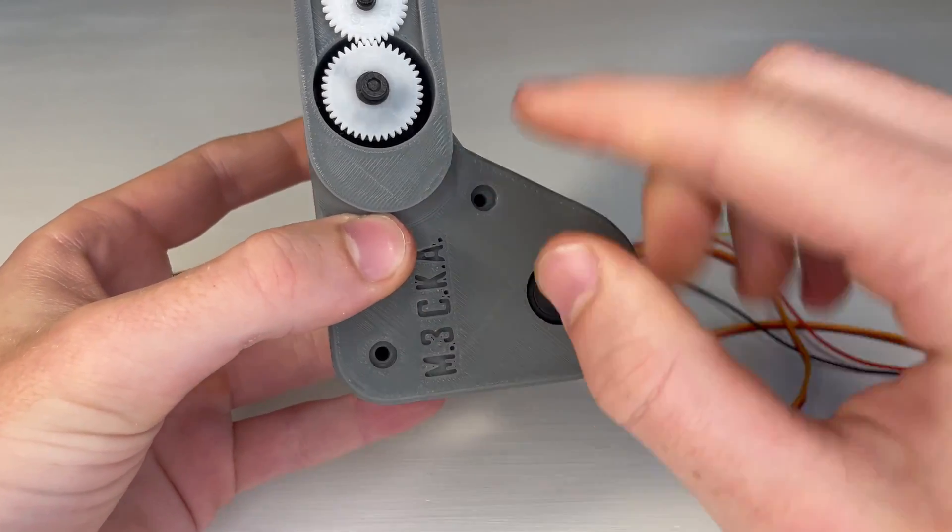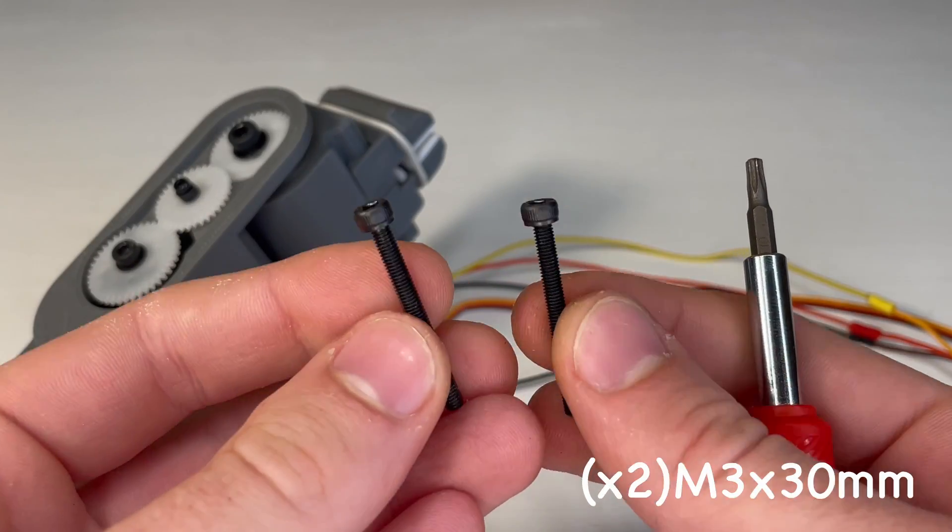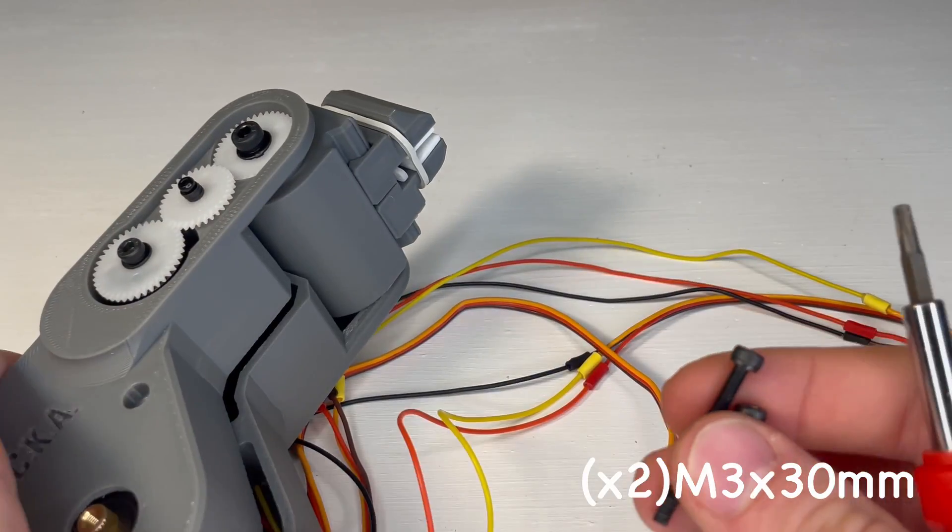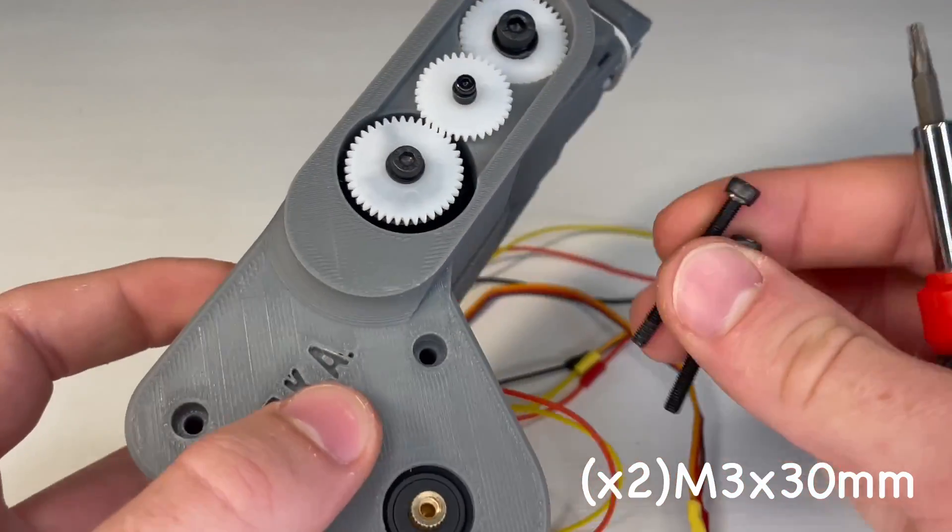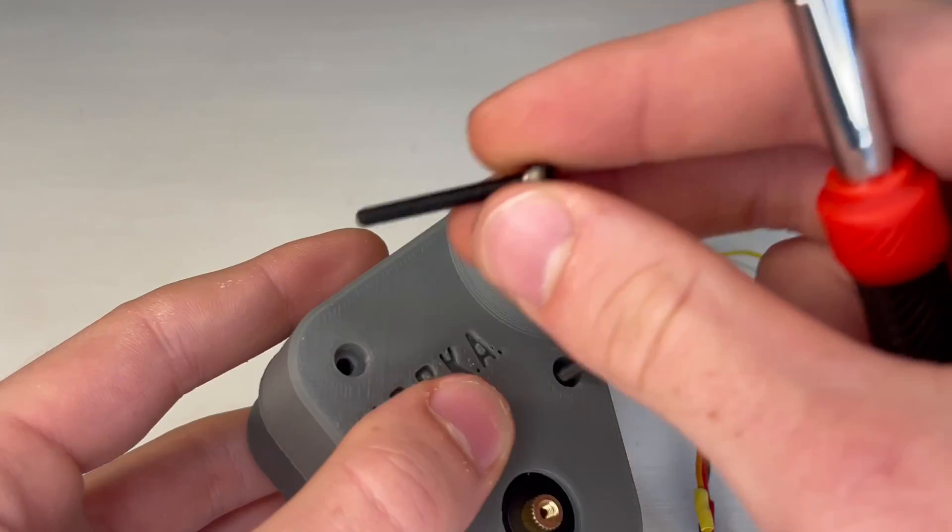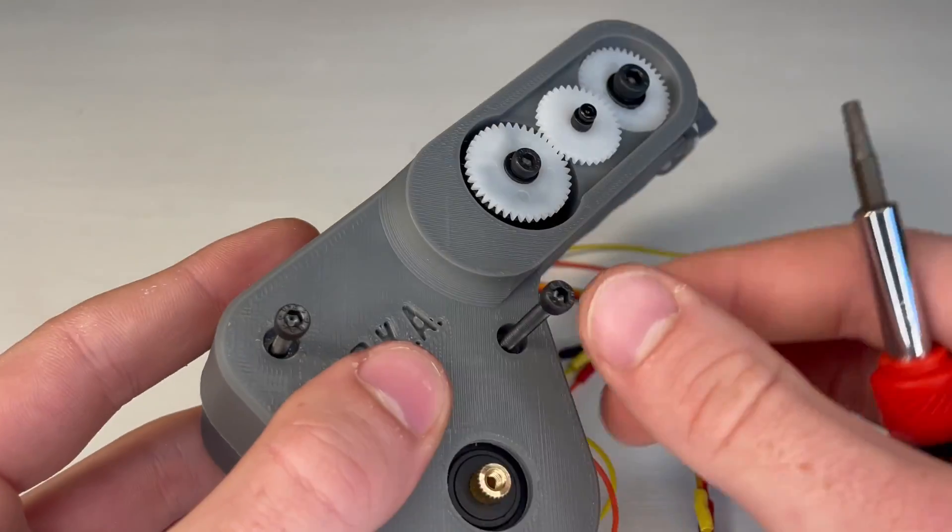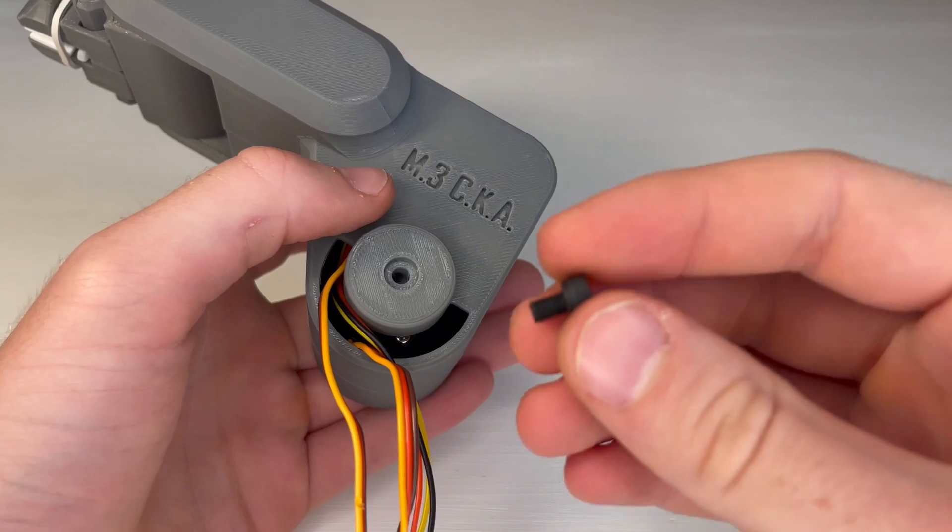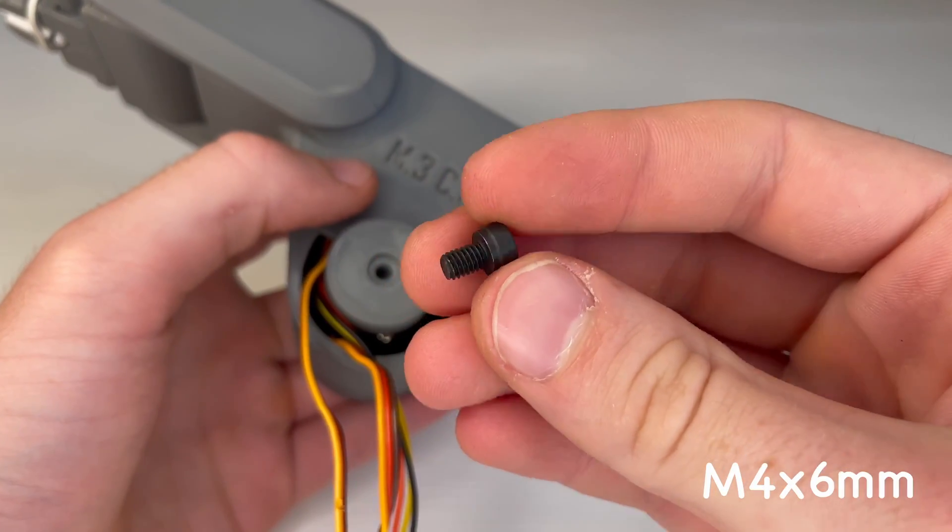And for this we'll need two M3x30mm screws. After those two are screwed down we'll also need an M4x6mm screw on the other side.